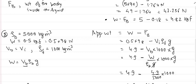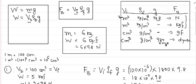Question 3: a solid of density 5000 kg per meter cube weighs 0.5 kgf, which equals 0.5 × 9.8 = 4.9 Newton. It is completely immersed in water, so VB = VI. Density of the fluid is 1000 kg per meter cube. We need to calculate the apparent weight. Since weight W = VB × ρB × g, we can write VB = W / (ρB × g).